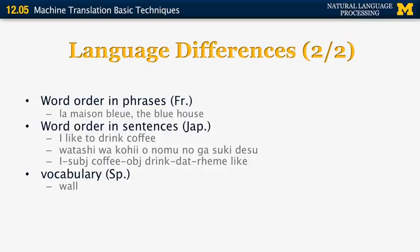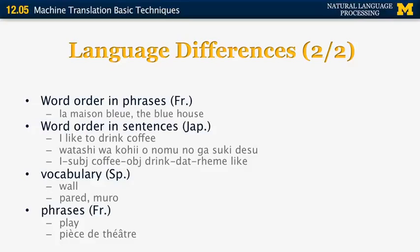Another example is vocabulary ambiguity in Spanish. In English, the word 'wall' can have multiple meanings — an internal wall or an external wall — and the Spanish words for these are 'pared' and 'muro,' respectively. You need to understand the context to produce the correct translation. A final example in French: entire phrases can substitute for single words. The word 'play' as a noun indicating a drama or comedy in theaters is translated in French as 'pièce de théâtre.' We can have one word in one language translated as multiple words in another, or multi-word expressions translated as multi-word expressions with very different internal structure.